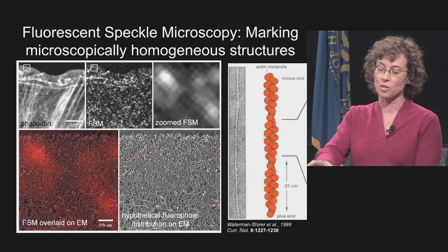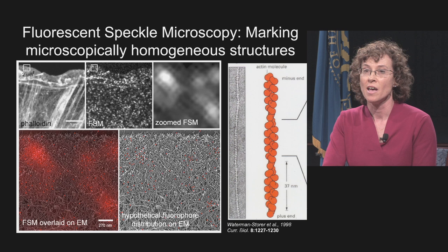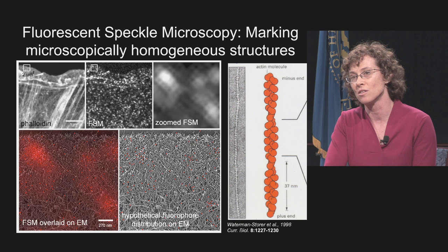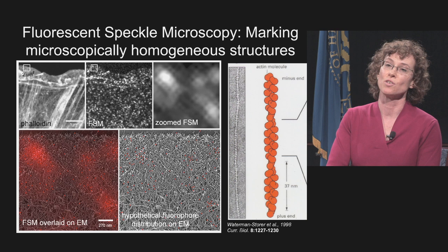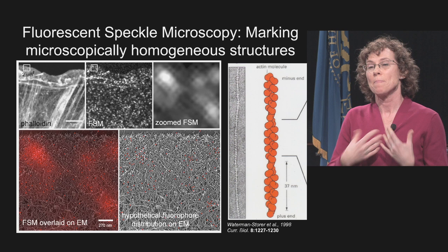We see the full actin cytoskeleton labeled with fluorescent phalloidin, while the cell expresses a very low level of fluorescently labeled actin in a different color. When that actin assembles into the cytoskeleton, because of the uneven assembly of fluorescent subunits with non-fluorescent subunits, what you end up with is a speckled image at the level of the light microscope — that would be the zoomed FSM image and the FSM image.